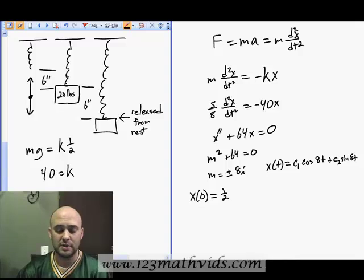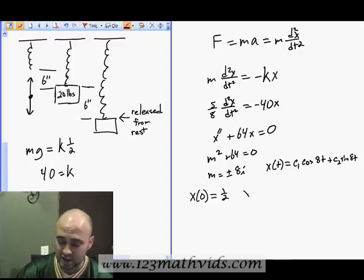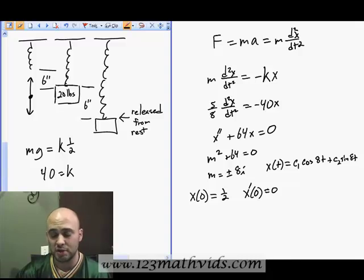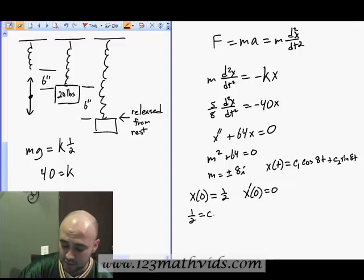What's my next initial condition? I didn't explicitly mention one, but one that's very common is the fact that when I release it, if I'm actually releasing it, it has 0 velocity when it starts. So velocity is the derivative of position with respect to time, which tells me velocity at time 0 is 0. If I apply the first one and say time is 0, sine of 0 is 0, cosine of 0 is 1, so 1 half equals c1.